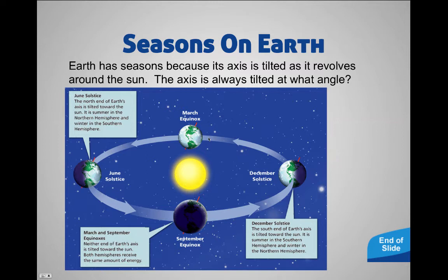Then going three months later into March we get a similar situation as in September — equal parts day and night. We're not really tilted towards or away from the Sun, and both hemispheres get the same amount of energy.